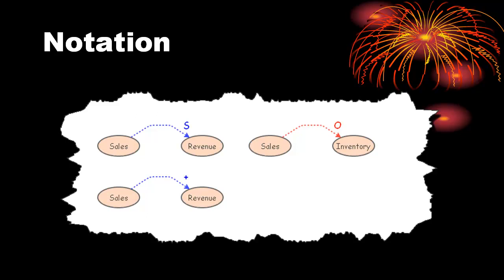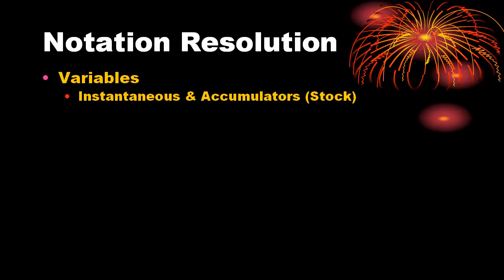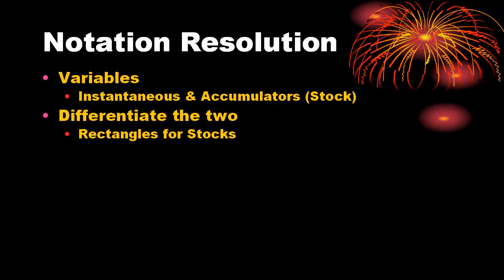The notation problem is easily resolved with the realization that there are actually two general types of variables. If sales increases, revenue immediately increases. Then there are variables which accumulate and take time to change. If we differentiate these two types of variables in the causal loop diagram, there's really no confusion whether one uses the S and O notation or the plus minus notation.